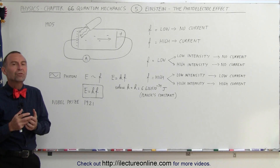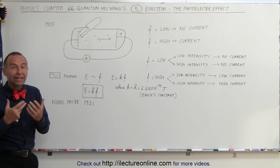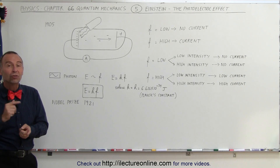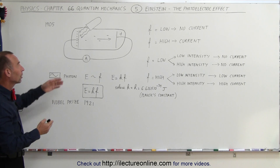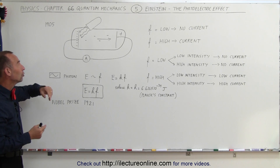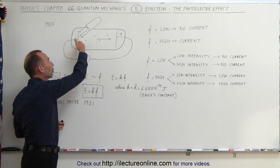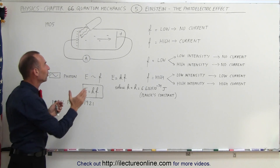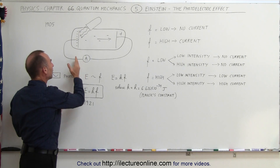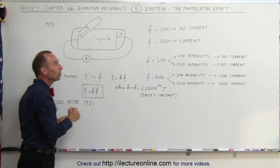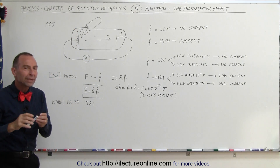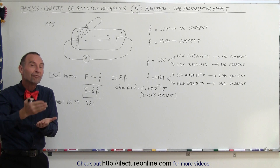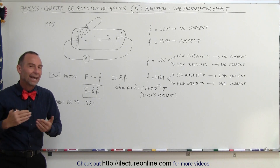Einstein wanted to prove that energy was indeed quantized, and in 1905 he managed to do so. He took a cathode ray tube and illuminated the cathode, which had negative charges on it — a battery pushed negative charges onto the cathode. He illuminated it with light that could vary both in frequency and intensity.